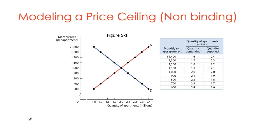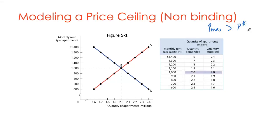Here is an example using the rental market for one-bedroom apartments, with quantity in millions on the x-axis and monthly rent on the y-axis. We have demand and supply curves plotted. Let's assume there is a P-max set at a price higher than the equilibrium price. The equilibrium price is $1,000 per month and equilibrium quantity is 2 million apartments. If we set P-max at $1,200, quantity supplied is 2.2 million and quantity demanded is only 1.8 million — creating a surplus.